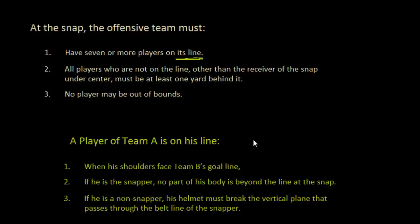If the player is the snapper, no part of his body can be beyond the line of scrimmage — just because you're snapping the ball doesn't mean you get to be in front of it. For all other players, the helmet must break the vertical plane that passes through the belt line of the snapper.